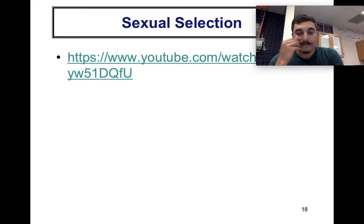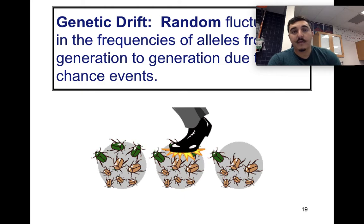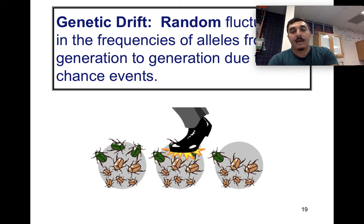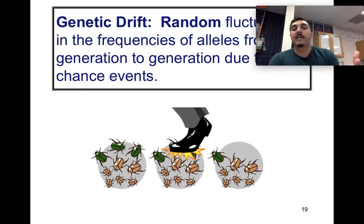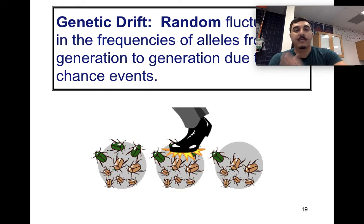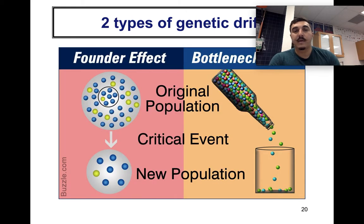Genetic drift refers to random fluctuations in allele frequencies from generation to generation due to chance events. For example, if a person randomly steps on green beetles — not because they're green, just by chance — the frequency of green beetles decreases and brown beetles reproduce more. That random event changed the population's allele frequencies.